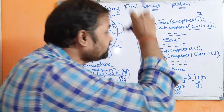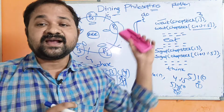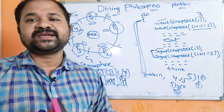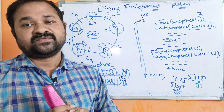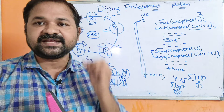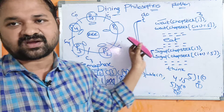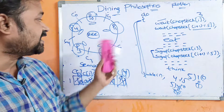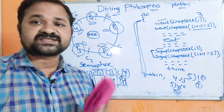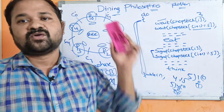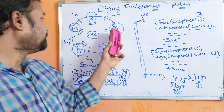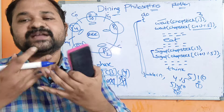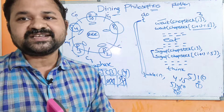However, this algorithm will still cause a deadlock problem. When all persons want to eat simultaneously, there is a possibility that deadlock may occur. Adjacent philosophers cannot eat simultaneously — while P0 is eating, P1 and P4 have to wait until P0 completes eating.